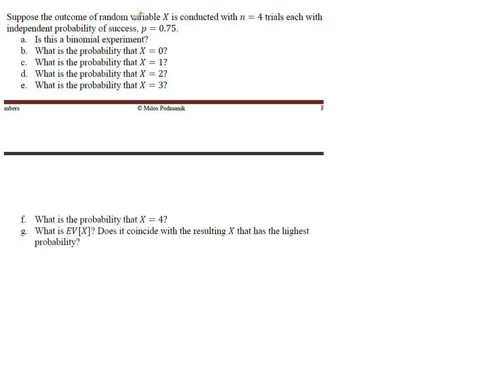Here we're measuring the random variable X, which has n equals 4 trials, each with independent probability of success p equals 0.75. The first question we have is, we're not really sure what exactly we're counting, but we're counting the number of possible successes in 4 trials.